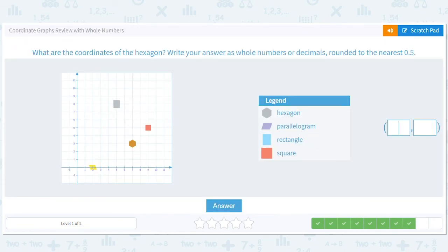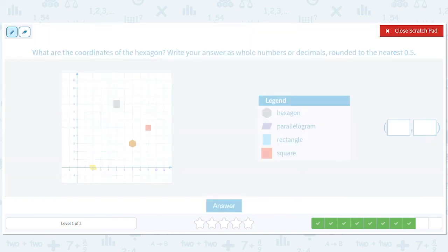What are the coordinates of the hexagon? Hex means six, so it's the six-sided shape. It'll be one, two, three, four, five, six, seven to the right, and one, two, three up. So (7,3) - those are the coordinates of the hexagon.